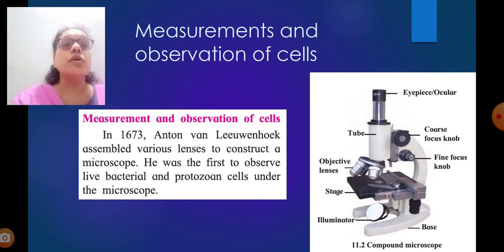In 1673, Anton van Leeuwenhoek assembled various lenses to construct a microscope. He was the first to observe live bacterial and protozoan cells under the microscope.